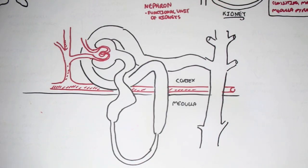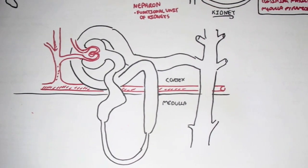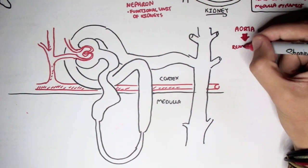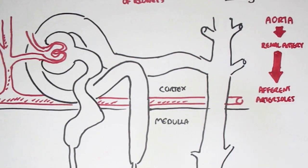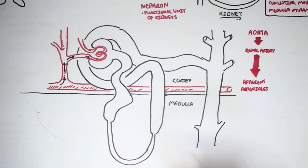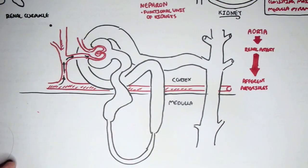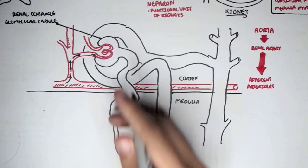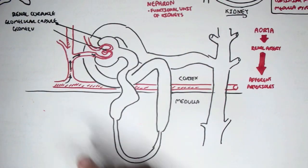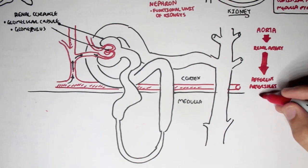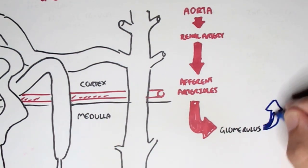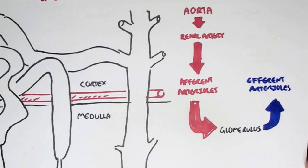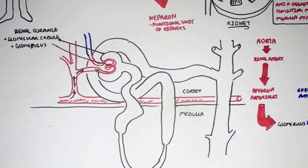Now let's concentrate on the blood supply to the kidneys. Remember that the aorta is the big artery which forms the renal artery that supplies the kidneys. The blood will then travel to essentially the afferent arterioles at the very end, and the afferent arterioles is what goes into the head of the nephron, known as the renal corpuscle, which consists of the glomerular capsule - the outer part of the head - and most importantly the glomerulus. The glomerulus is formed from the afferent arterioles, and this is where filtration occurs. After this, the glomerulus will form the efferent arterioles, which leaves the nephron.